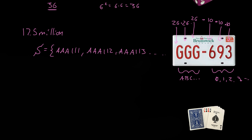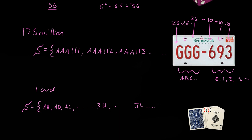Now let's go on to picking one card out of a deck. What's the sample space of picking one card? Well, you can pick out the Ace of Hearts, the Ace of Diamonds, the Ace of Clubs, the Three of Hearts, the Jack of Hearts, the King of Hearts, and so on. Assuming there are no Jokers, the sample space size is 52.